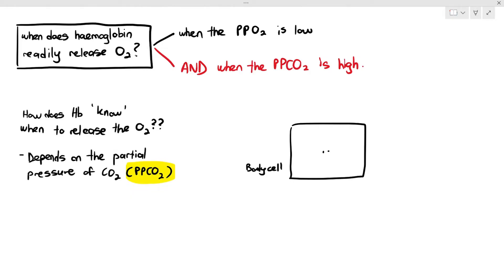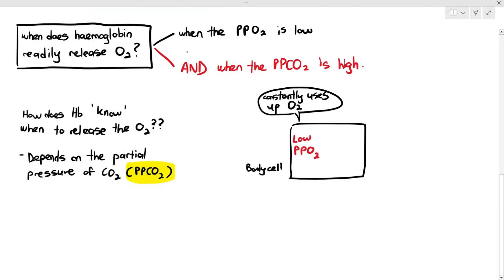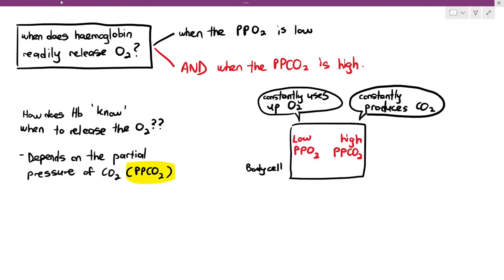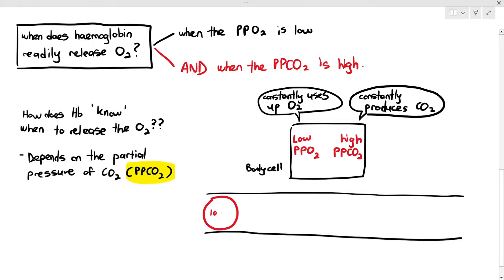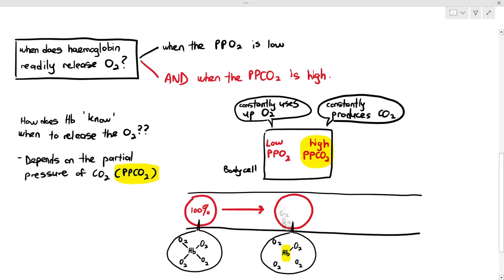Think about it — a body cell, especially like a muscle cell or a neuron, uses up oxygen quite quickly. Body cells constantly use up oxygen due to aerobic respiration, which causes them to have a low partial pressure of oxygen. And because they undergo aerobic respiration, they constantly produce carbon dioxide, which causes them to have a high partial pressure of carbon dioxide. So when a red blood cell passes through and is exposed to these body cells, the high partial pressure of carbon dioxide causes oxygen to be readily released from the hemoglobin and delivered to the body cells.